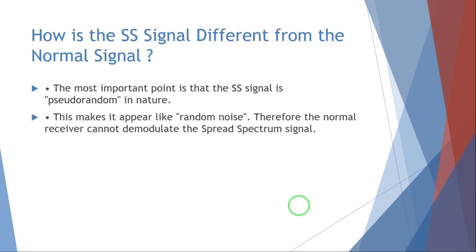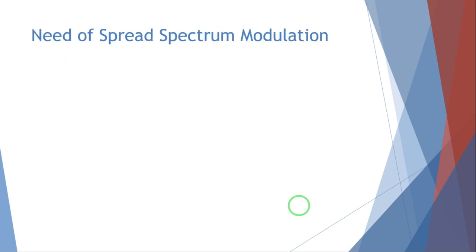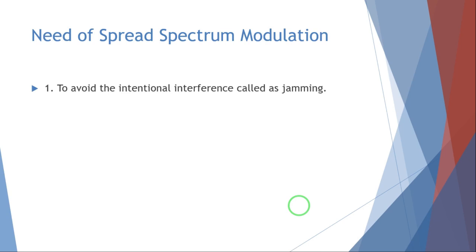The most important point is that the spread spectrum signal is pseudo-random in nature, which makes it appear like random noise. Therefore, a normal receiver cannot demodulate the spread spectrum signal. Only a specially designed receiver can demodulate it to recover the information. Due to this characteristic, the spread spectrum signal appears as noise to any unintended receiver. The need for spread spectrum modulation is to avoid intentional interference called jamming.